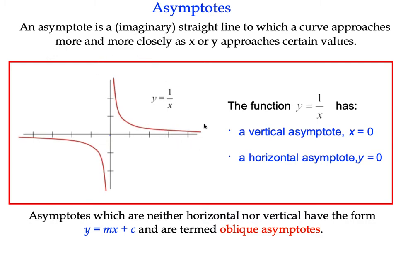We define an asymptote as an imaginary straight line to which a curve approaches as x or y get large or small.